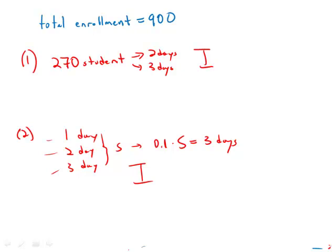Now, if we combine the two statements, we know that the two-day and three-day attendees together equal 270 students. But we have no idea how many attended on one day, and because of that, we have no idea what 10% of this total would be. We have no way to predict how many students attended for three full days.